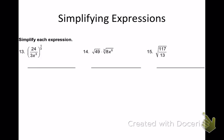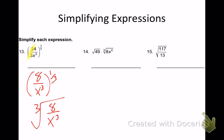Number 13 — some of you are struggling. I want to simplify first. What's 24 over 3? I end up with 8 over x to the 3rd, all to the 1 third power. What's the same as a 1 third power written as a radical? That would be the cube root of 8 over x to the 3rd. The cube root of 8 is 2, and the cube root of x to the 3rd — 3 divided by 3 is 1 — so just x. Answer: 2 over x.